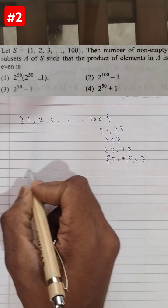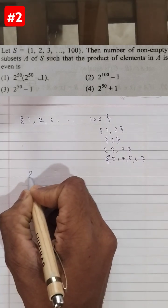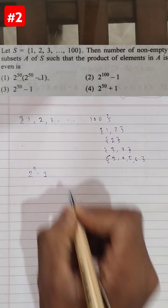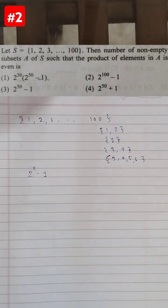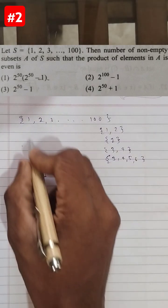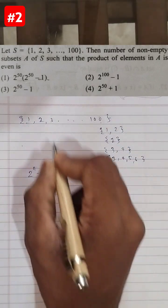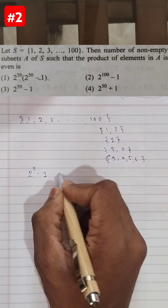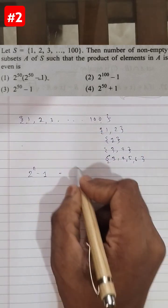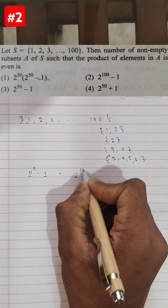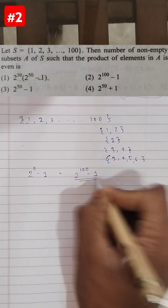We have the equation 2 raised to n minus 1, where n is the total number of elements in the set. We know that n is actually 100 in this case, so the number of subsets this set has is 2 raised to 100 minus 1.